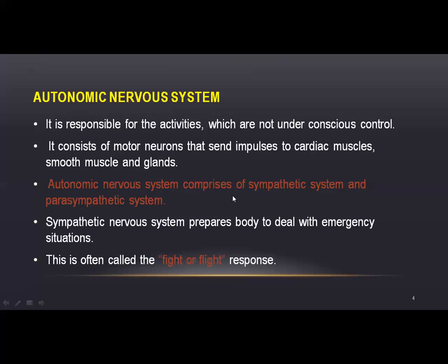The Autonomic Nervous System comprises the Sympathetic System and the Parasympathetic System. The Sympathetic Nervous System prepares the body to deal with emergency situations. This is often called the fight or flight response — you are prepared to fight or flee from a threat. These responses are part of the sympathetic system.